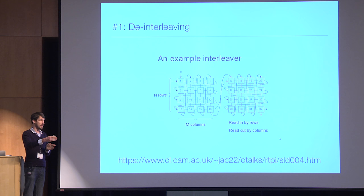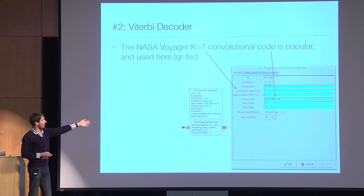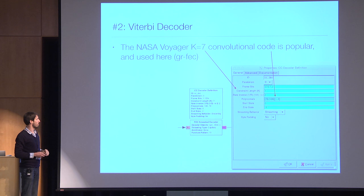It uses one of those interleavers, and then Viterbi decoding. It was really nice just to plug in GRFec and have it work straight off the bat. Interestingly — or uninterestingly because it seems so common — they use Voyager K7 for that, and it worked like a snap.